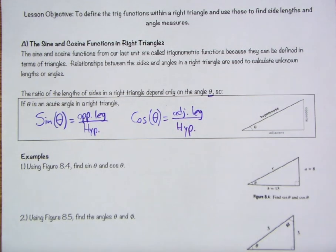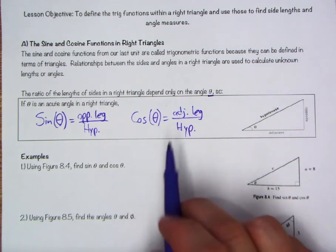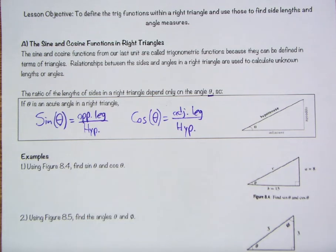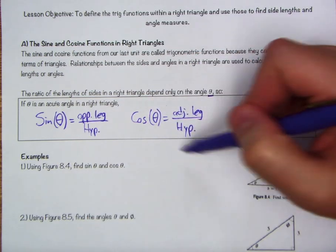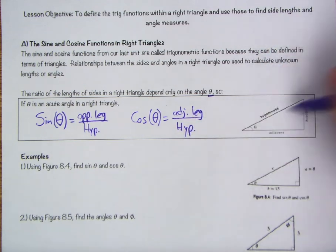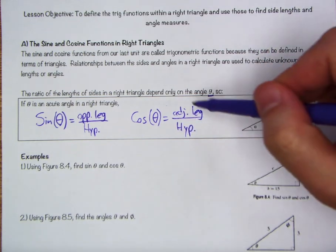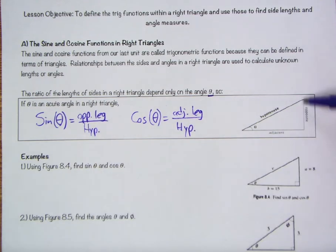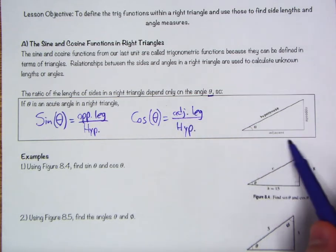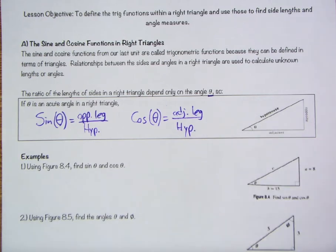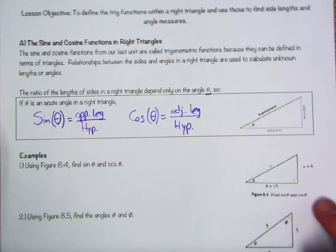As we all know, we had that really handy mnemonic device, SOHCAHTOA, to help us remind how to set these up. So we've got sine of theta is equal to the opposite leg divided by the hypotenuse. And we know that cosine of theta is equivalent to the adjacent leg divided by the hypotenuse. So that gives us enough here to start setting up any one of those ratios involving the hypotenuse.